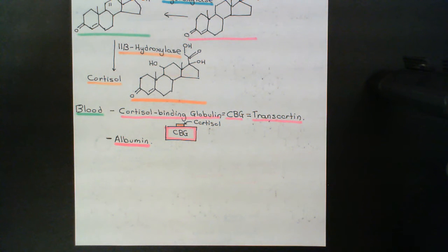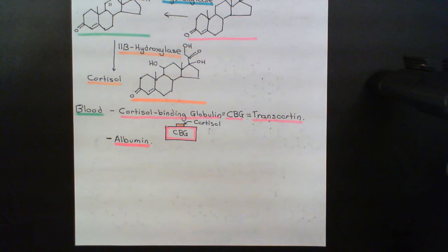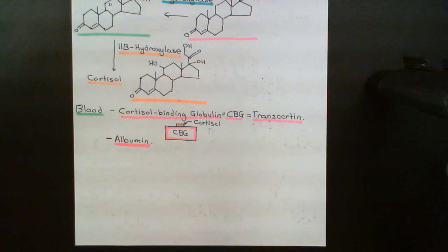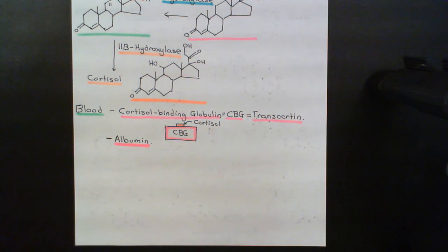Welcome to part three of the video on the hypothalamic-pituitary-adrenal axis. We've now talked about the synthesis and release of cortisol into the bloodstream by the cells of the zona fasciculata. We've then talked about the proteins that are in the blood which will bind to cortisol and transport it around the bloodstream, because it's still not particularly water-soluble. Now what we want to talk about is what cortisol is actually going to do.